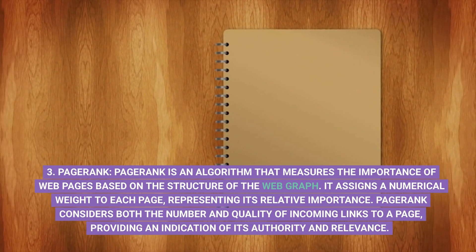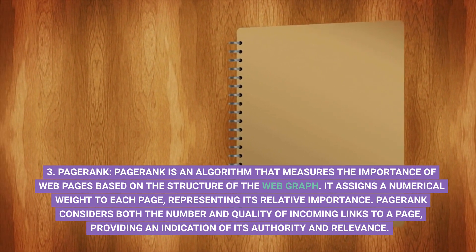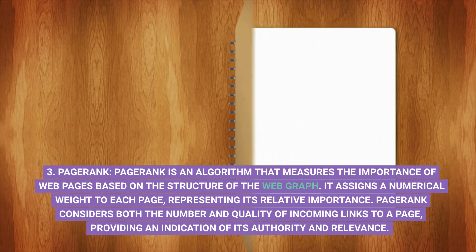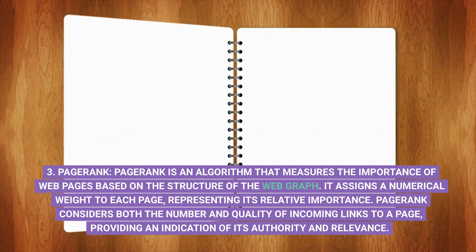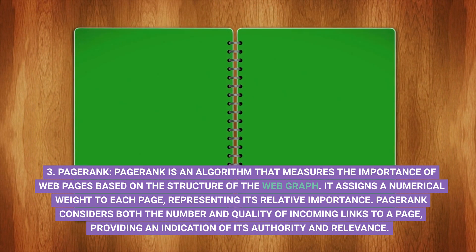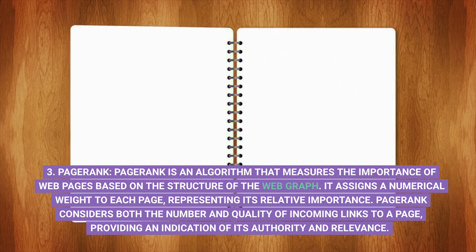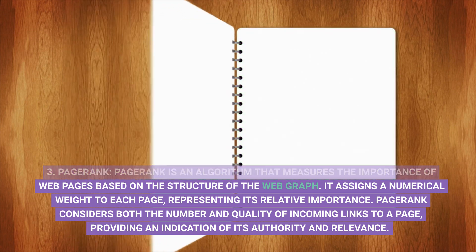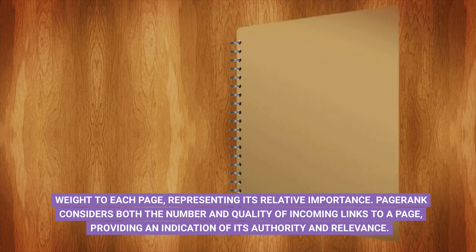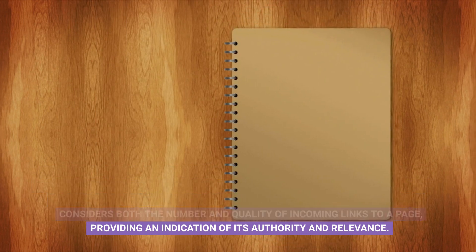3. PageRank. PageRank is an algorithm that measures the importance of web pages based on the structure of the web graph. It assigns a numerical weight to each page, representing its relative importance. PageRank considers both the number and quality of incoming links to a page, providing an indication of its authority and relevance.